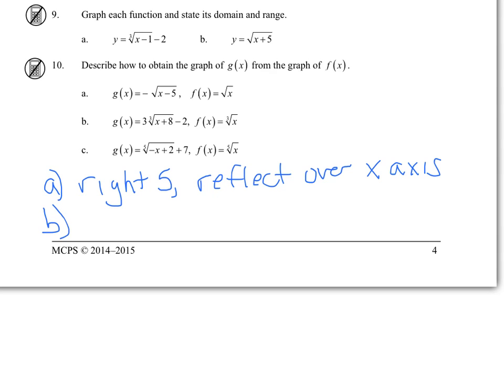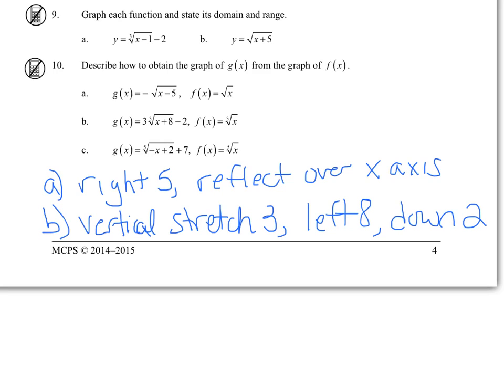For B, we'll start with the vertical stretch of 3 from the coefficient. Left 8 from the plus 8 with the x. And then down 2 with the -2 at the end.